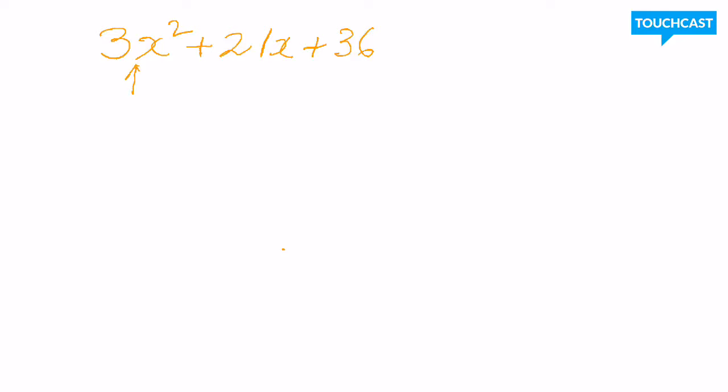So if I take it out of the bracket, 3 is the common factor, and x² + 7x + 12 is the remaining expression.